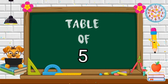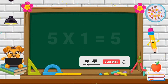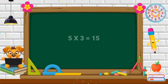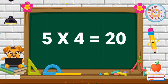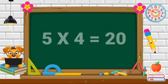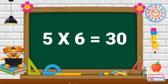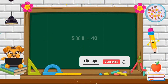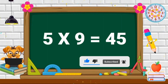Table of 5. 5 ones are 5. 5 twos are 10. 5 threes are 15. 5 fours are 20. 5 fives are 25. 5 sixes are 30. 5 sevens are 35. 5 eights are 40. 5 nines are 45.